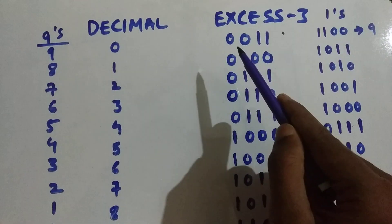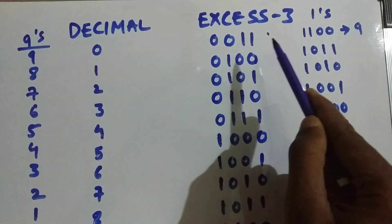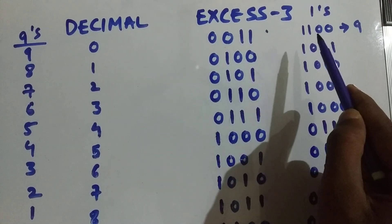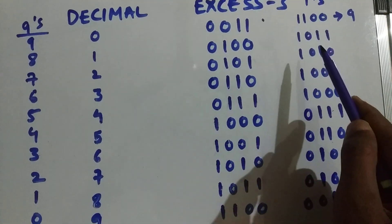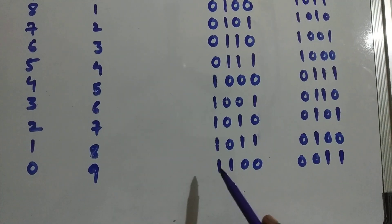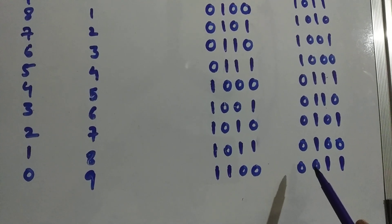We need to take 1's complement of Excess-3. 1's complement of 0111 is 1100. 1's complement of 0100 is 1011. And so on, keep it until 9. So 1100, 1's complement is 0011.